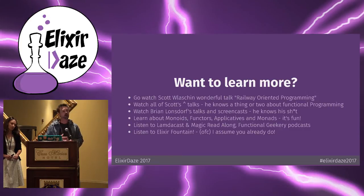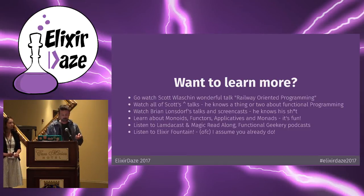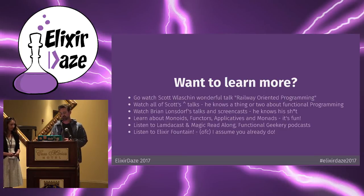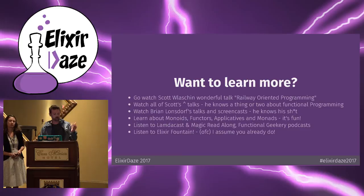If you're interested in this kind of approach to dealing with errors, I recommend watching Scott's railway-oriented programming - any of the talks by Scott are really good and very entertaining. Anything by Brian Lonsdorff is highly recommended. Learning about Monoids, Functors, and Applicatives is quite interesting and fun when dealing with handling errors in this way. Listening to LambdaCast, Magic Readalong, and Functional Geekery will help you understand these things. And of course, listen to Elixir Fountain - but I assume you already are.